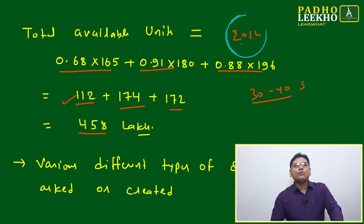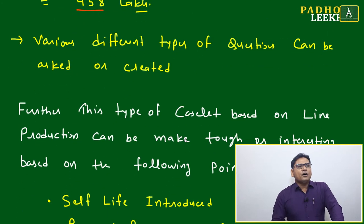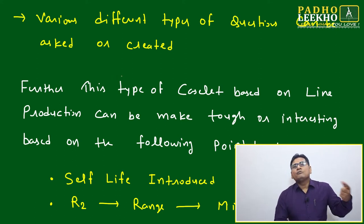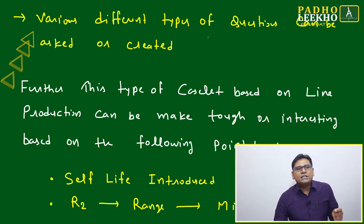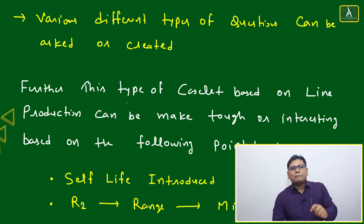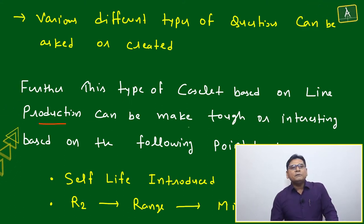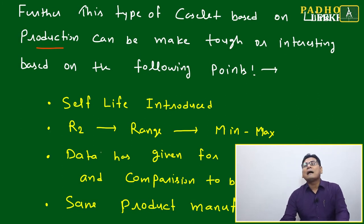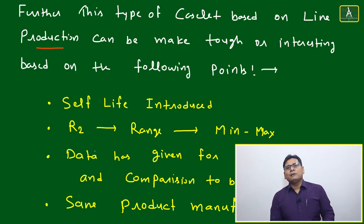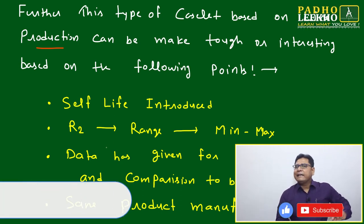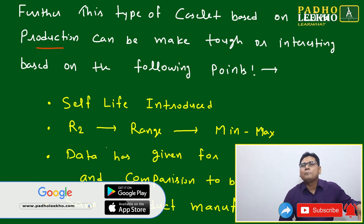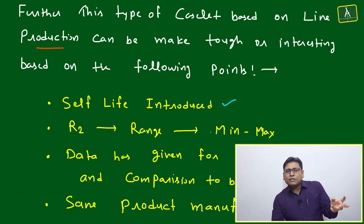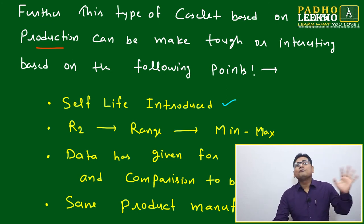Approximately 458 lakh units will be available in 2012 for usage of product P1. Now let's understand how many different types of questions or complexities can be made based on this line production caselet. Several fine-tuning points can make the question tougher: one is introducing self-life, since after 10 or 20 years the product may become 100% obsolete.